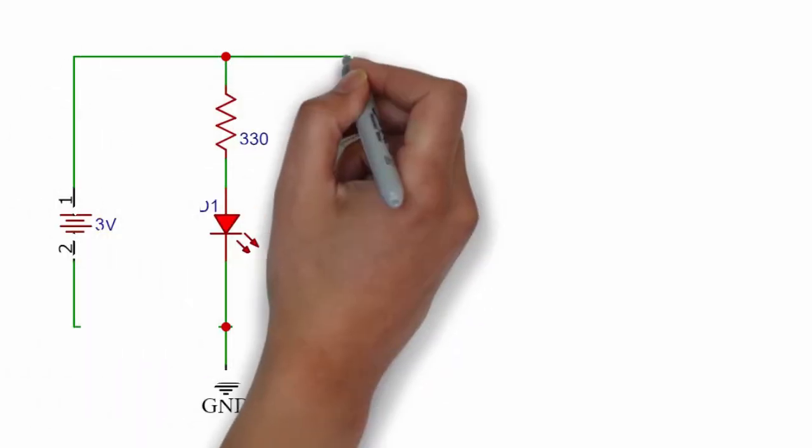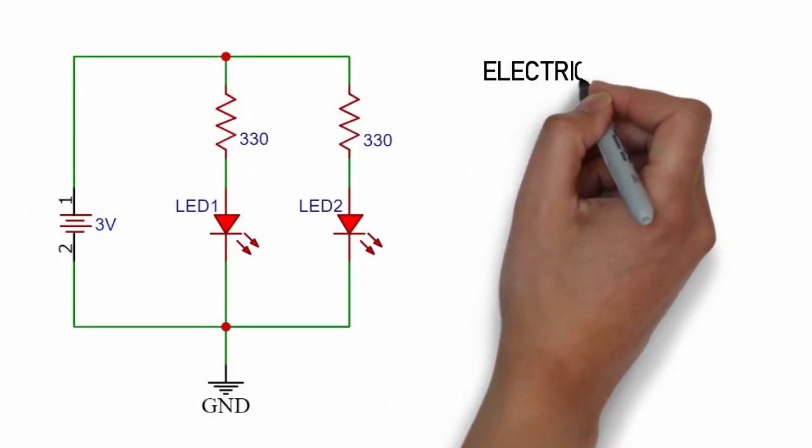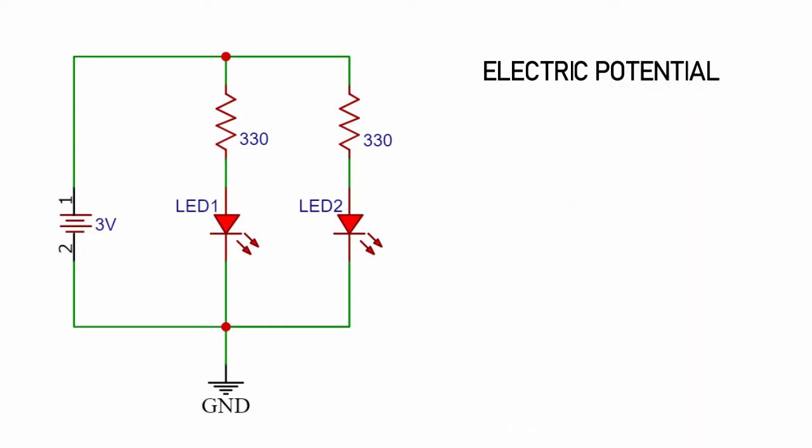So that is all about the introduction part. Now we are gonna see what exactly is happening around us. Let us take this circuit for better understanding. Let's begin with the very basic concept of electric potential.